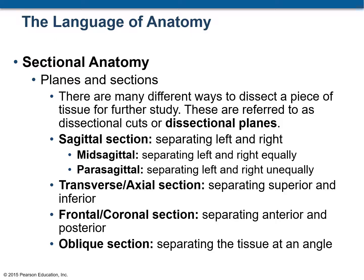The next one is the transverse or axial section, which separates the body into an upper and lower part. The frontal or coronal section separates the anterior (ventral) part from the posterior or dorsal part. While an oblique section separates the tissue at an angle — that means it is not at 90 degrees.